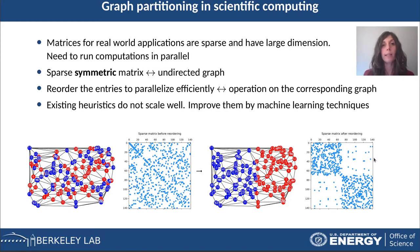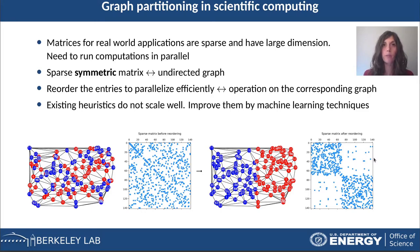In particular, there is the necessity of running the computations in parallel. If we stick to the class of sparse symmetric matrices, then it is possible to associate to each one of them an undirected graph. Indeed, a sparse symmetric matrix can be considered as the adjacency matrix of an undirected graph.